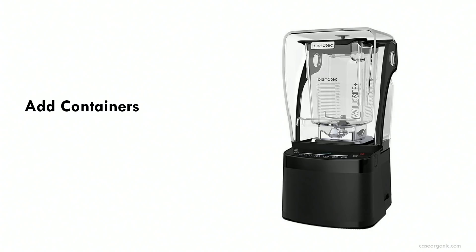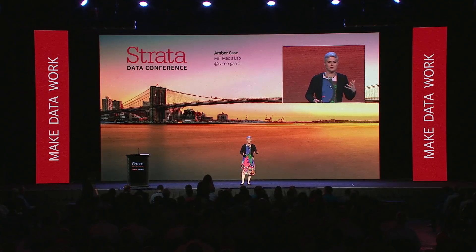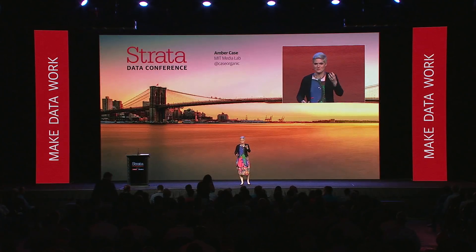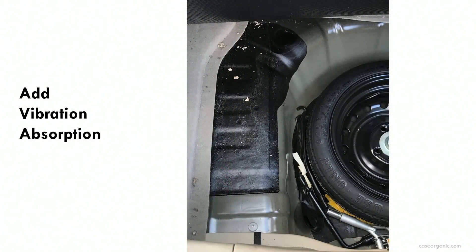Containerization is another approach. There are these thousand-dollar Blendtec blenders that you see at Jamba Juice. The reason those were built was because the workers and customers were so annoyed by the blender sound that they started containerizing the sound — they put the motor in a container, put a plastic container around that, reduced all the empty spaces, and added vibration absorption underneath it. This thousand-dollar Blendtec blender became a very successful product because it was quieter than a normal conversation, allowing us to live alongside our products a lot better.